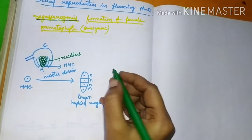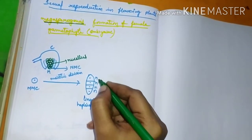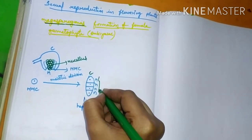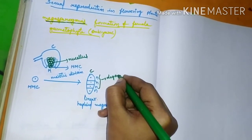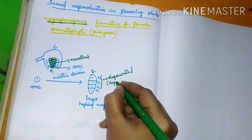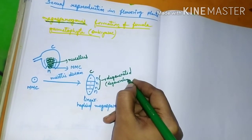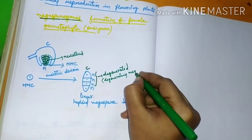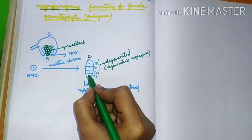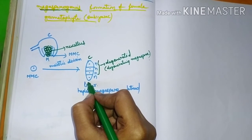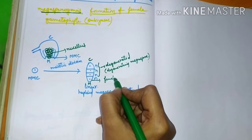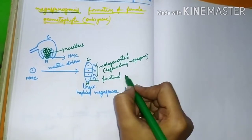In this, the three megaspores which are arranged at the chalazal end are degenerated, which are called degenerating megaspores. The megaspore at the micropylar end acts as the functional megaspore.